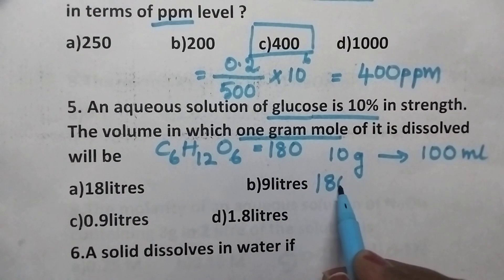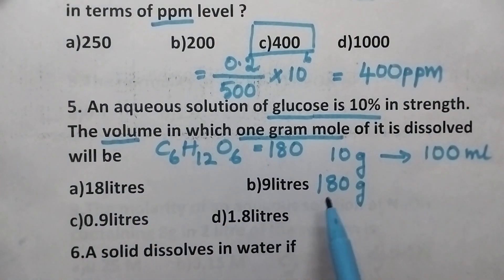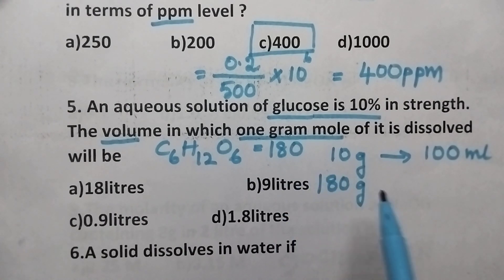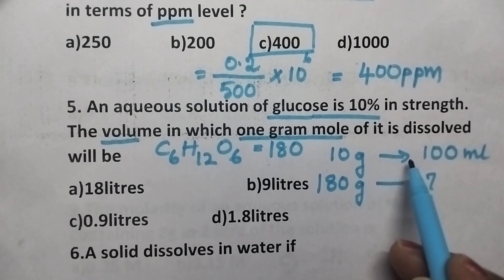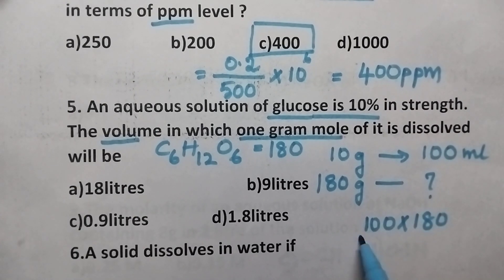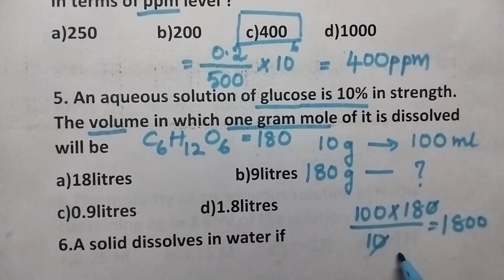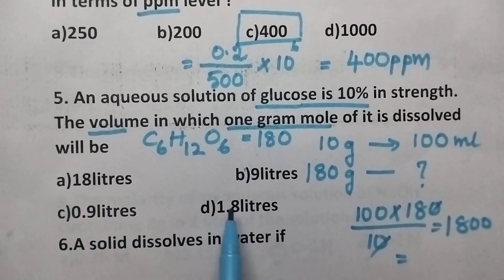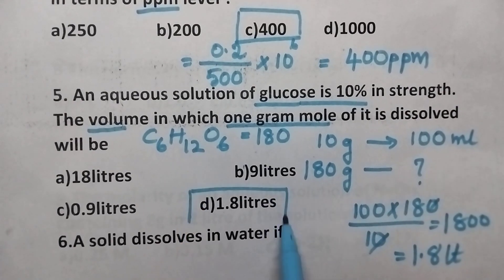1 gram mole means 180 grams will be dissolved. We are supposed to calculate how much volume contains 180 grams of glucose. Simply do the cross multiplication: that is equal to 100 into 180 divided by 10, and that is equal to 1800 ml. If you carefully observe the options, the answer is given in terms of liters, and hence it is exactly equal to 1.8 liters. So option D is the right answer.